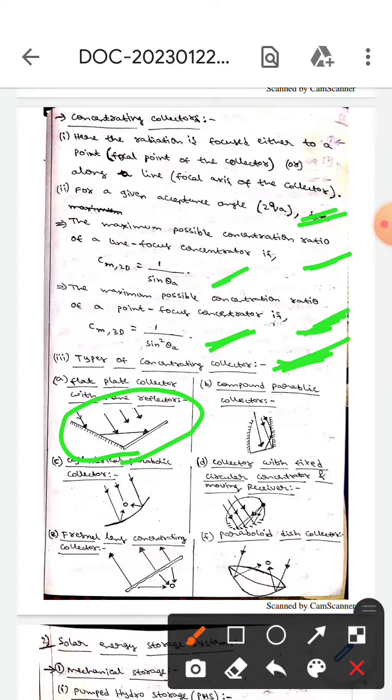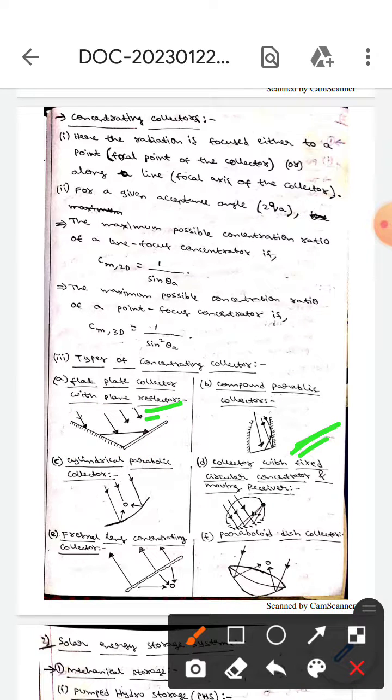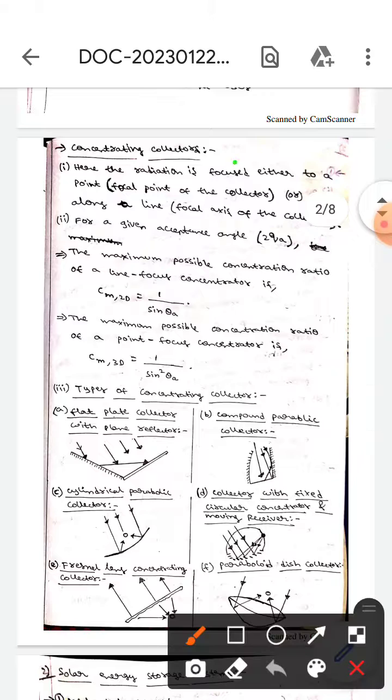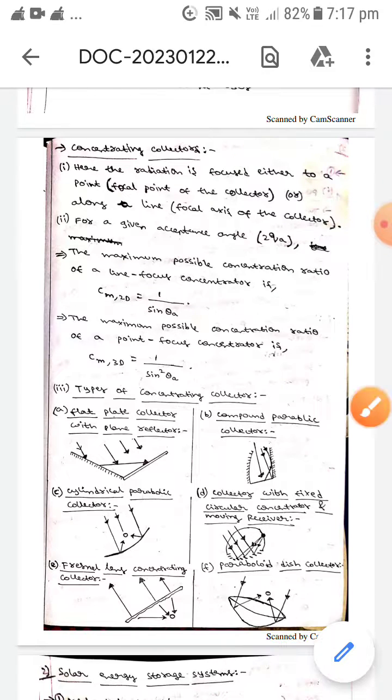This is a flatbed collector with plane reflector. This is the compound parabolic collector. This is the cylindrical parabolic collector. This is the collector with fixed circular concentrator and moving receiver. This is the Fresnel lens or concentration collector. This is the parabolic disc collector. These are all the concentrating collectors. I hope you understand, guys. Thank you.